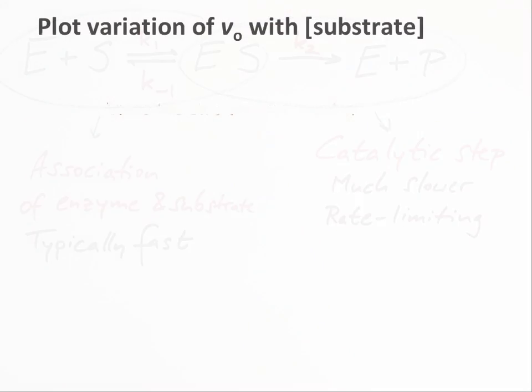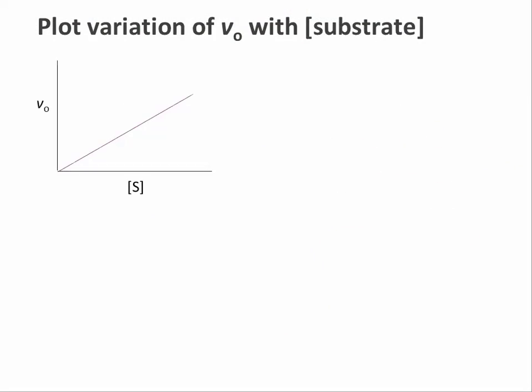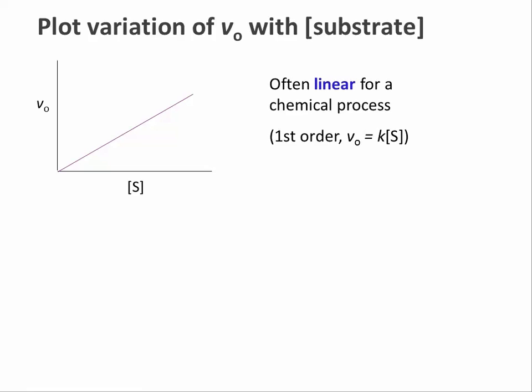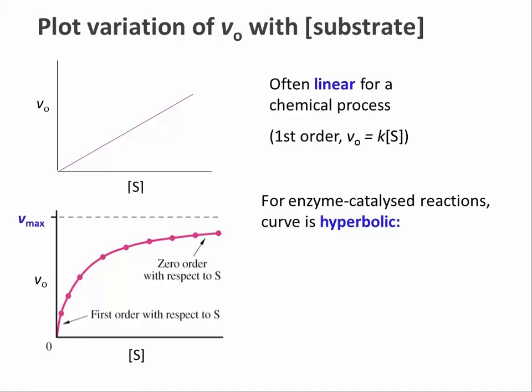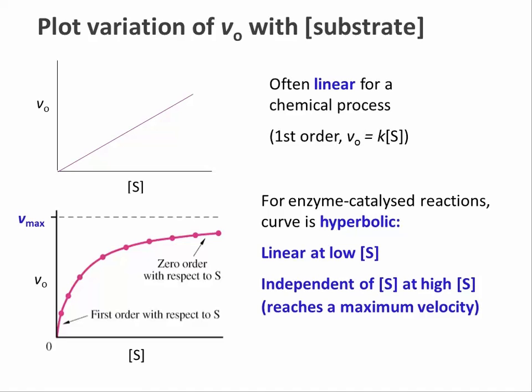To reiterate: for a simple chemical reaction, the initial velocity is directly proportional to the substrate concentration via V0 equals k times S. There is a linear correlation and we call this first-order kinetics. For enzyme-catalyzed reactions, the V0 versus S plot is hyperbolic. At low concentrations of substrate, V0 increases linearly with S, and we have more or less first-order kinetics. At much higher concentrations of S, the reaction becomes practically independent of the substrate concentration, and that is what we call zero-order kinetics.